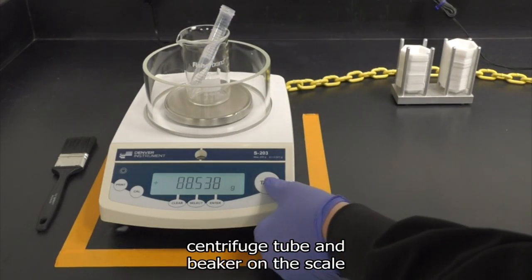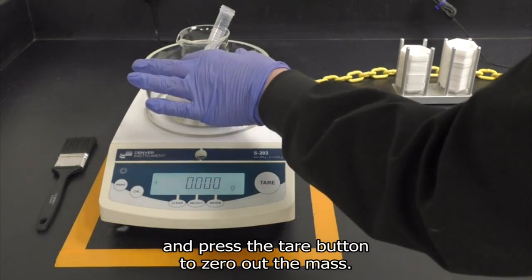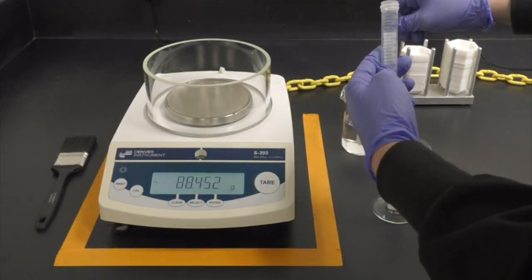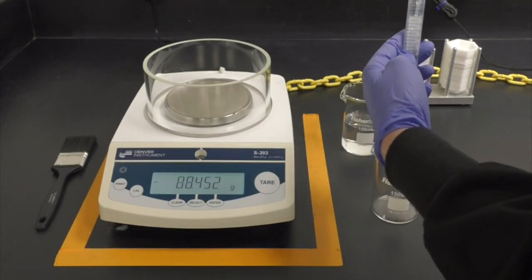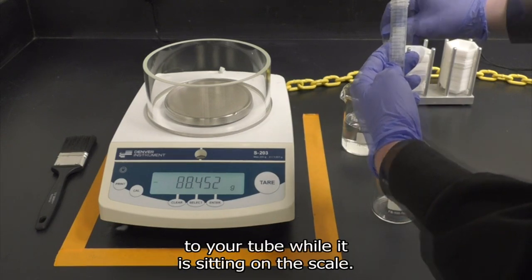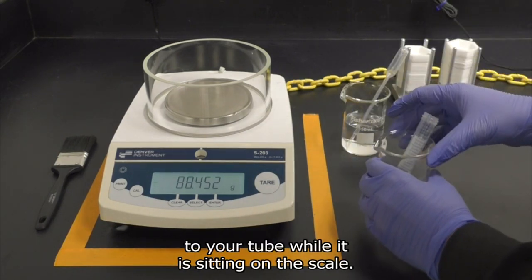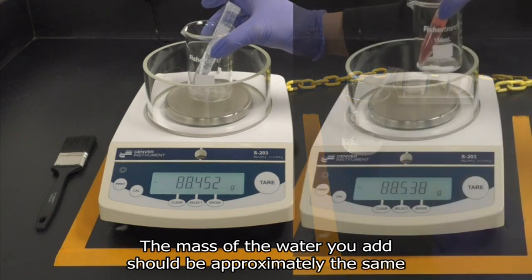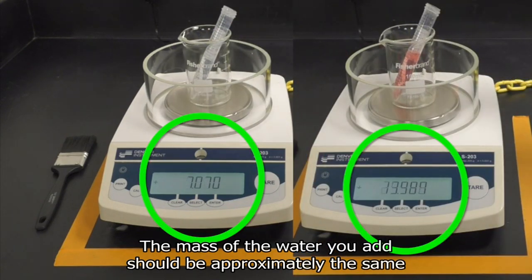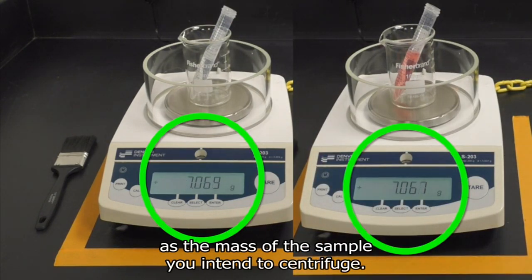To make a balance tube, you should first place an empty centrifuge tube and beaker on the scale and press the tare button to zero out the mass. Then you can start adding your liquid. You should never add liquid to your tube while it is sitting on the scale. The mass of the water you add should be approximately the same as the mass of the sample you intend to centrifuge.